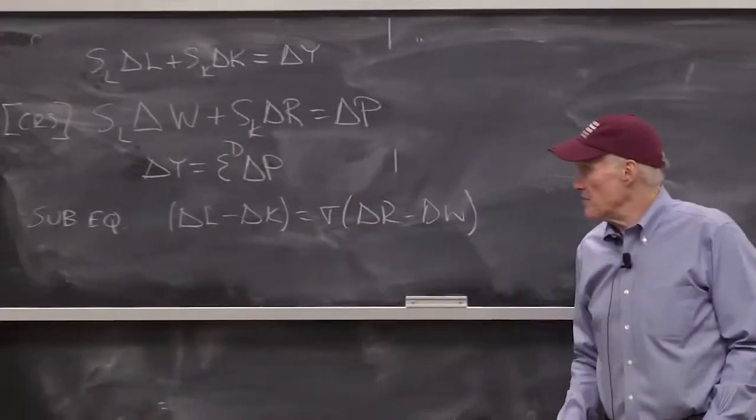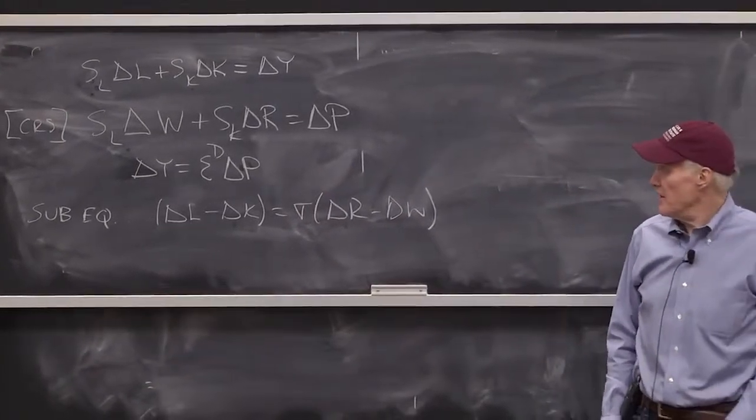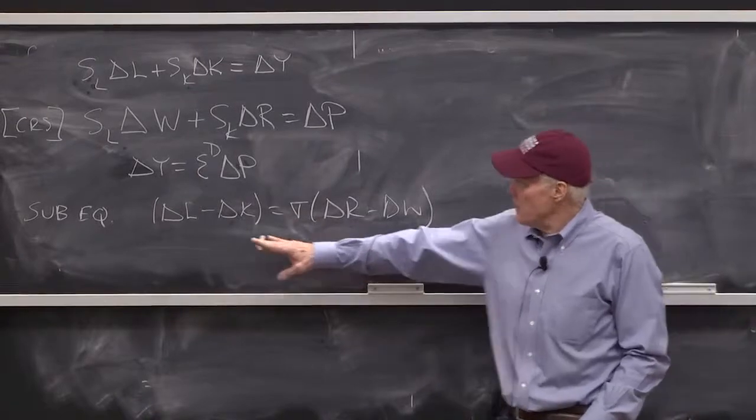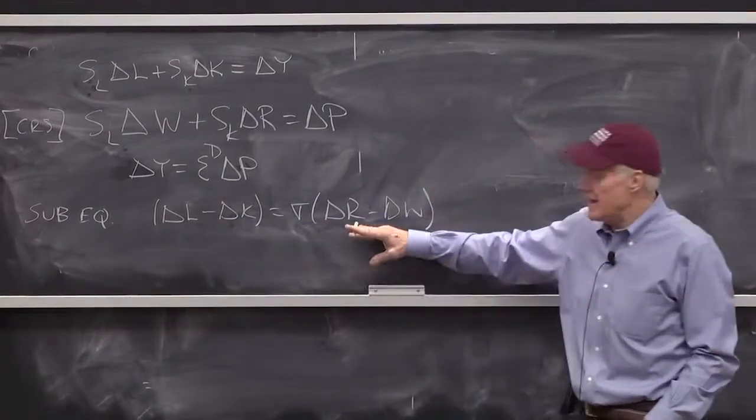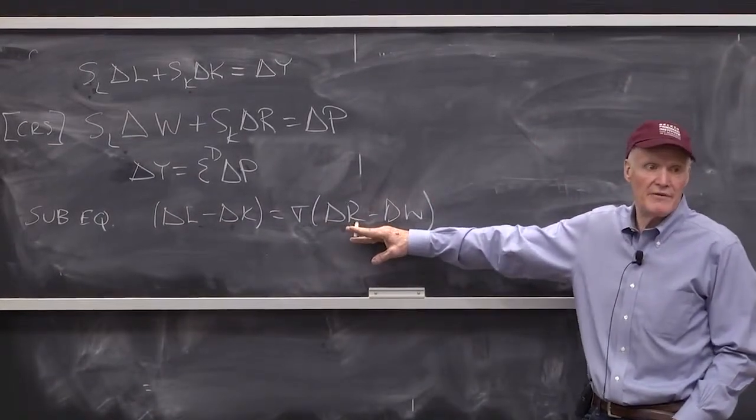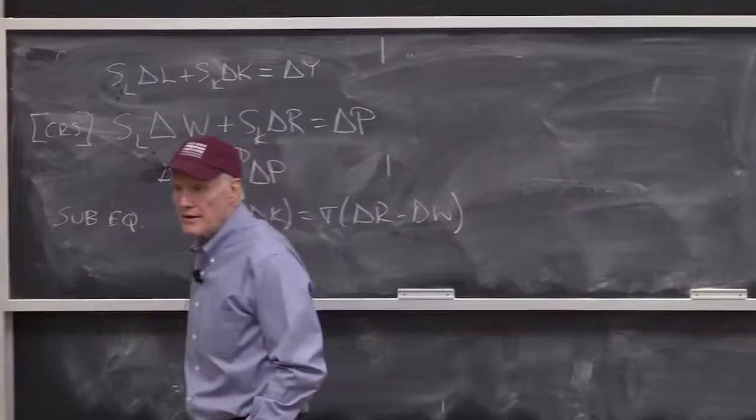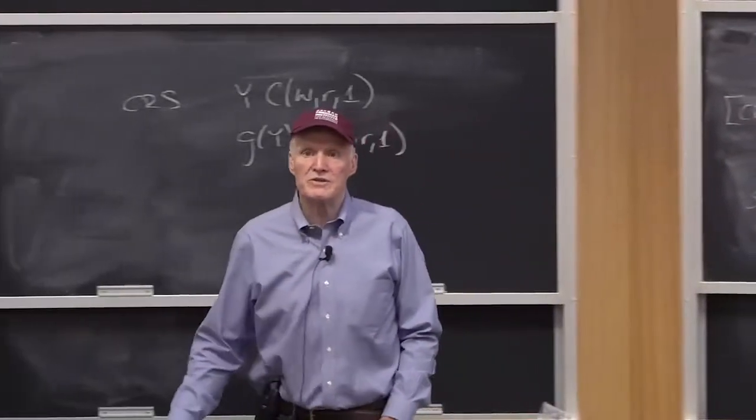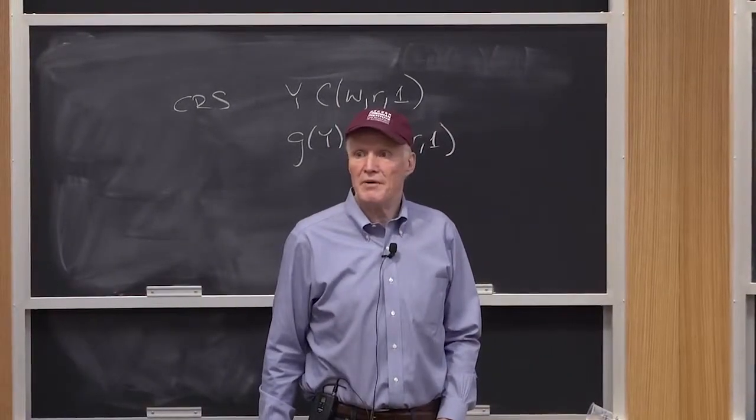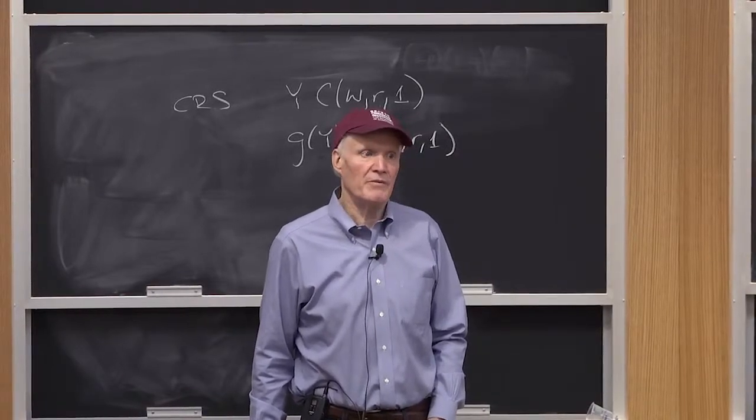And sigma is a measure of the elasticity of substitution. And it's a positive number, because we have L versus K here, and R versus W on this side. We flipped it around. Any questions that people have about that? People see how that works?